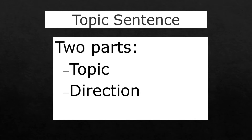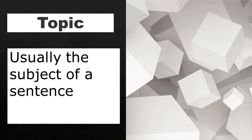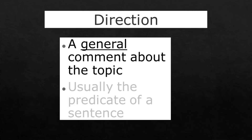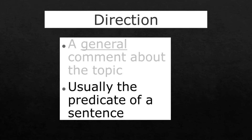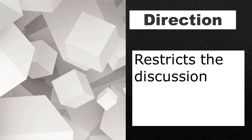The two parts are the topic and the direction. The topic is a word or phrase, and it is usually the subject of a sentence. The direction is a general comment about the topic, and it is usually the predicate of a sentence. The direction tells the reader what the writer will talk about regarding the topic, and because of that, the direction restricts the discussion about the topic.